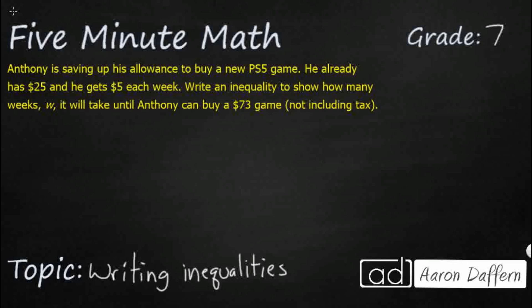We have a pretty simple problem here. Anthony is saving up his allowance to buy a new PS5 game. He already has $25, so he's starting with some money, and then he gets $5 each week — that's his allowance. We need to write an inequality using greater than, greater than or equal to, less than, or less than or equal to, to show how many weeks — that's our variable W — it will take until he can buy the game, which costs $73, not including tax.